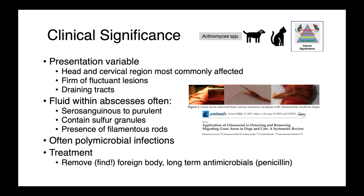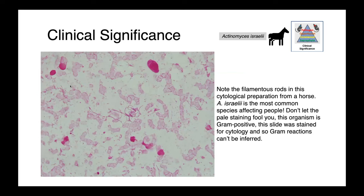Here you can see filamentous rods from a cytological preparation from a horse. In this case, we have what looks like a pink structure — remember, cytology is not done using the gram stain. This is probably a hematoxylin and eosin preparation, and so although this organism is gram-positive, it appears pink.